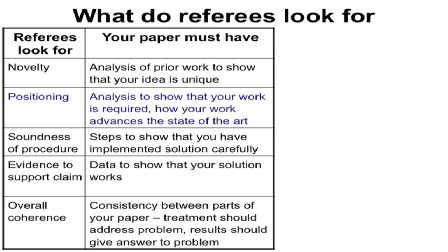This is useful for the TAs also here. What do referees look for in your paper? The first thing that any referee looks for is novelty. What novelty means is that you want to analyze your prior work — work done before you by other people — to show that your idea is unique. Often what happens is we get carried away by our idea and run away with implementing it. Many of our papers fail at this point because we are not able to establish the novelty of the work.